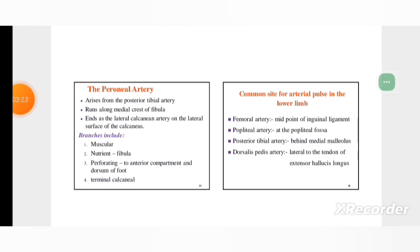Common sites for arterial pulse in the lower limb: femoral artery at midpoint of inguinal ligament, popliteal artery at the popliteal fossa, posterior tibial artery behind medial malleolus, dorsalis pedis artery lateral to the tendon of extensor hallucis longus.